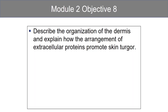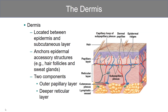Module 2, Objective 8: describes the organization of the dermis and explains how the arrangement of the extracellular proteins promote skin turgor. The dermis is sandwiched between the epidermis and the subcutaneous fat layer. It anchors the epidermal accessory structures, such as the glands and the follicles, and it consists of two components: a superficial papillary layer named because of these nipple-like papilla, and a deeper reticular layer.